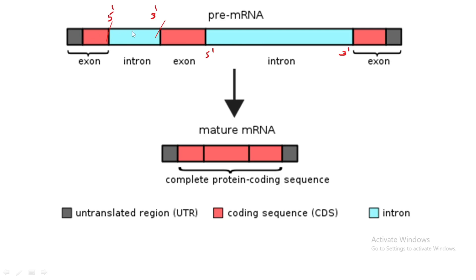Each intron sequence has a 5' end and a 3' end. For removing them, an incision — a cut — needs to be made at both ends, and these sequences are removed. After removing the sequences, the remaining portions are covalently ligated. An important thing is that this splicing must be very correct and accurate. If even one base is deleted or misplaced, it will affect the mature mRNA and its translation.